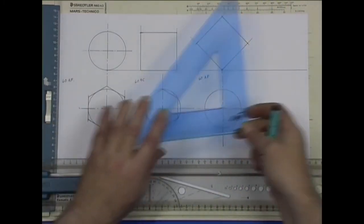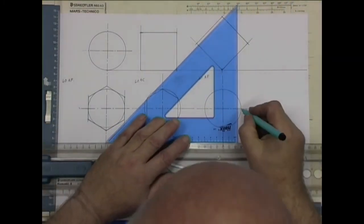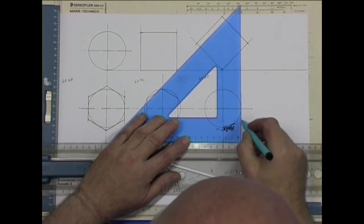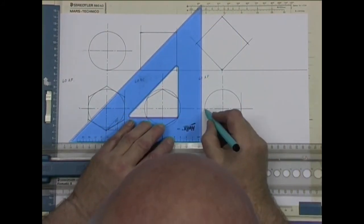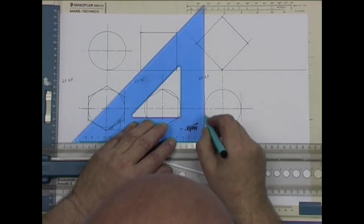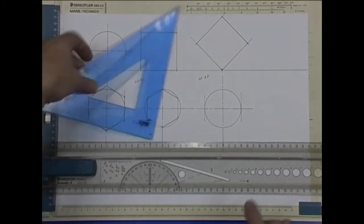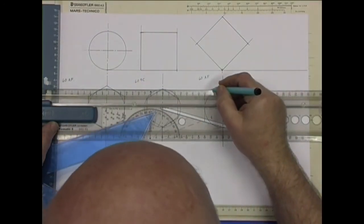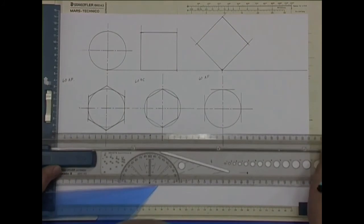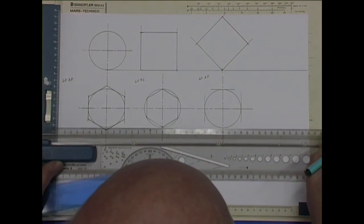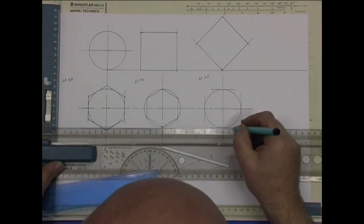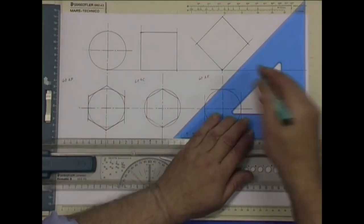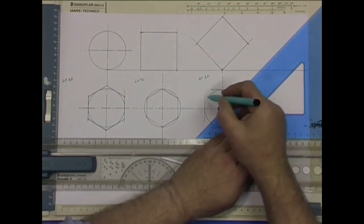I'm going to use a 45 degree set square to draw these, because we'll need that for the other side. So that's the two horizontal faces. That's the two horizontal.